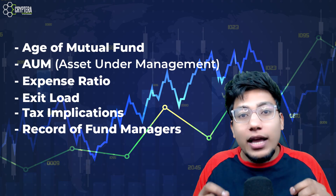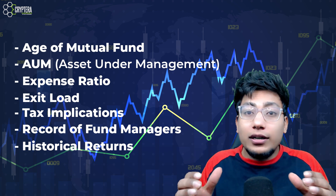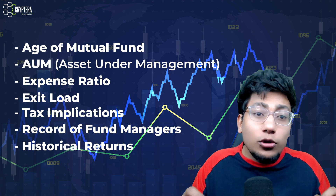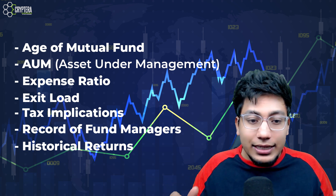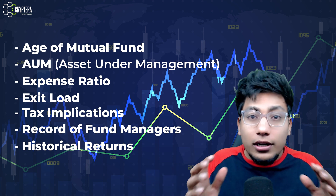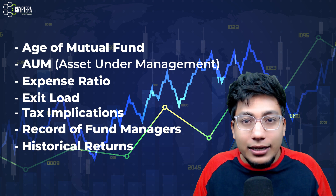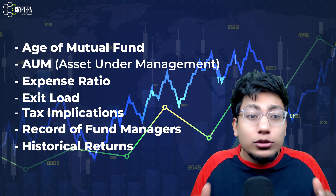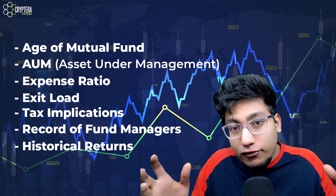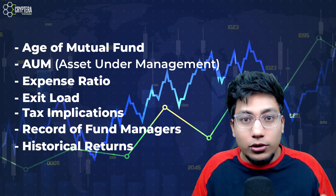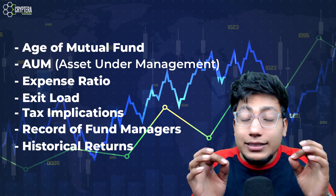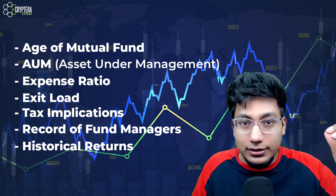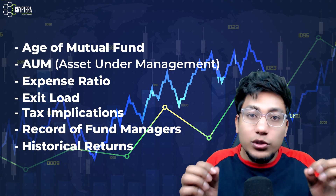The next one on my list is to look at past returns and compare those returns with mutual funds within the same category — how have they performed, and can I find something better? A lot of people make the mistake of only looking at one year, three year, five year returns and if they look good, they simply invest. But understand one thing — the dynamics of the market change every second, every minute, every year. A mutual fund giving 25% return today may give only 15% next year and drop from rank 1 to rank 10. So it simply doesn't make sense to just look at percentage return — all the different parameters we've discussed are equally important fundamentals.